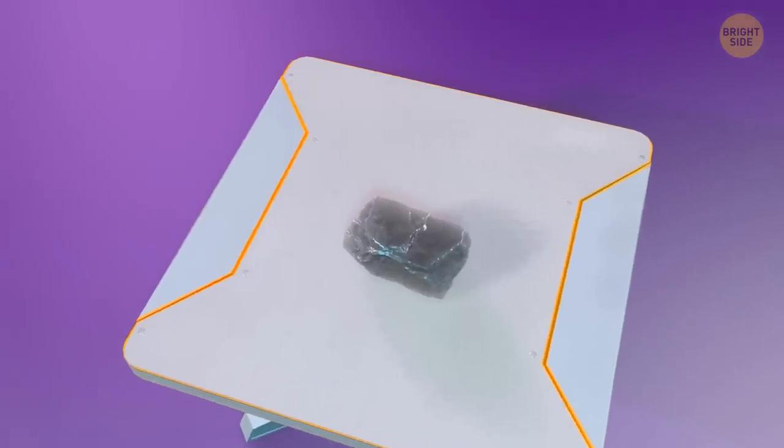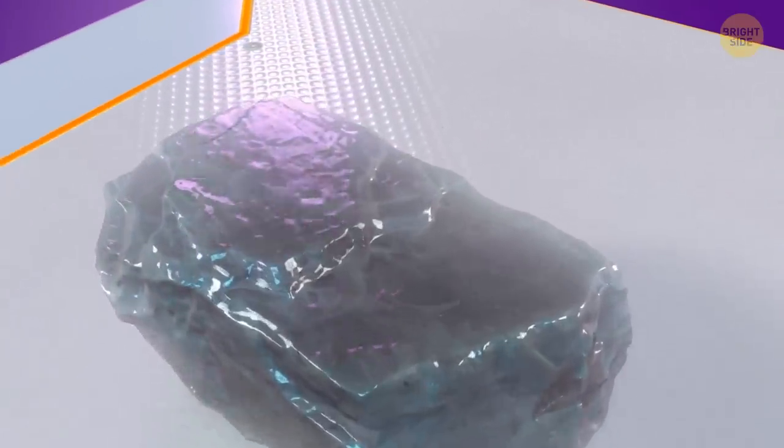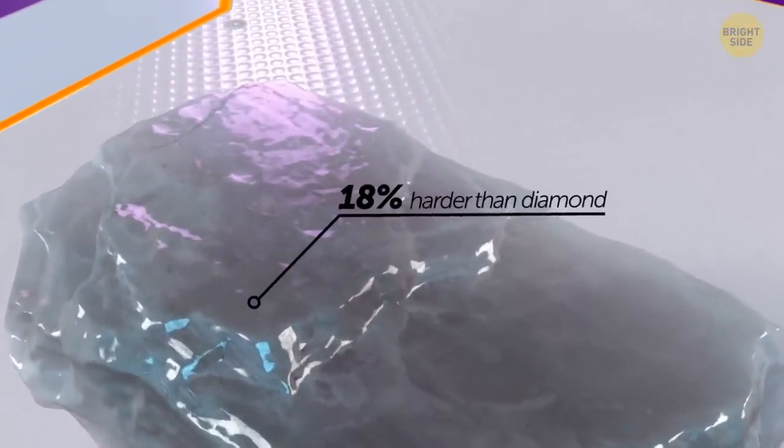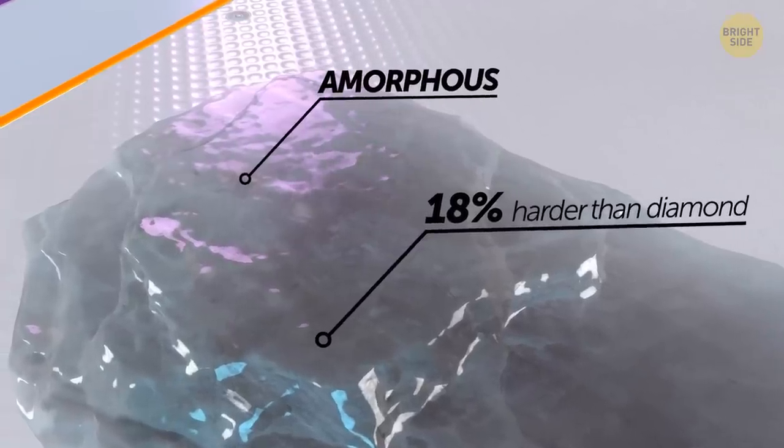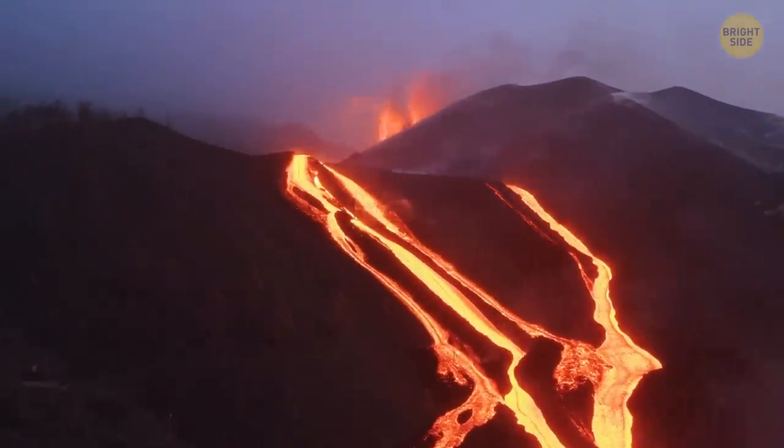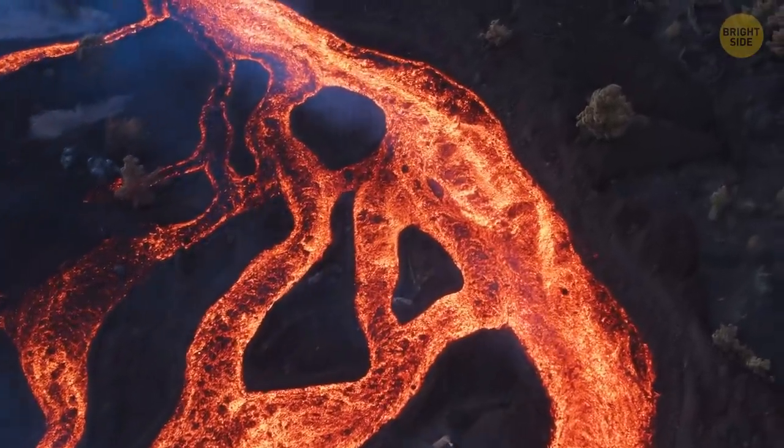The next one is wurtzite boron nitride. It's quite weird. It's harder than diamond. Some studies say 18% harder, which is a lot. And it's amorphous at the same time. But the craziest part is that it's extremely rare because it forms only during volcanic eruptions.